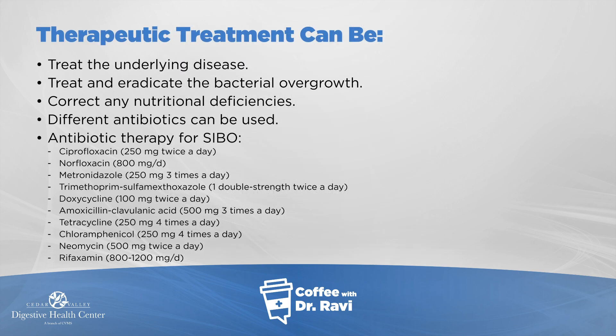Treatment involves correlating your symptoms — which could be bloating, gas, burping, or loose bowel movements — with a trained clinical provider's assessment, since many GI illnesses can cause the same symptoms. Treatment is essentially antibiotics, such as ciprofloxacin, norfloxacin, metronidazole, or neomycin, or sometimes combinations. Symptoms often improve, but they occasionally recur and require repeated treatment.